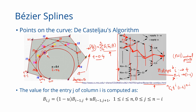Read the proof at the provided link. From de Casteljau's algorithm it also becomes clear that the value for entry j of column i is computed as: b_{i,j} = (1 − u) × b_{i−1, j} + u × b_{i−1, j+1}. That is, (1 − u) times the j-th element in the previous column plus u times the (j+1)-th element in the previous column — exactly what was done in the example. De Casteljau's algorithm can be written in this recursive form.